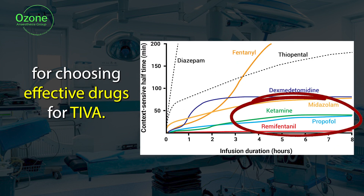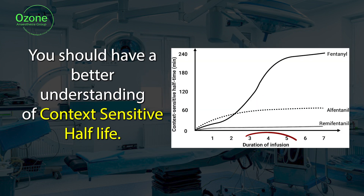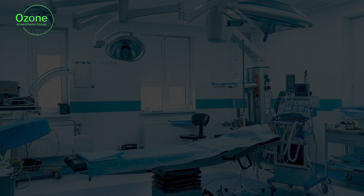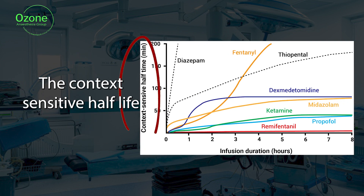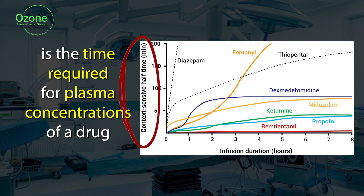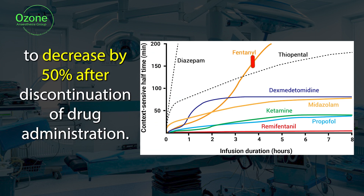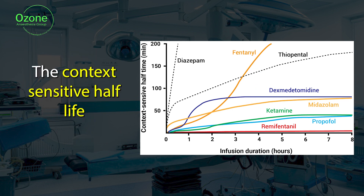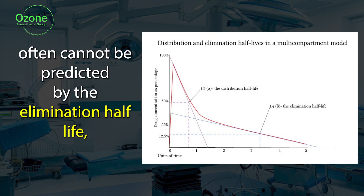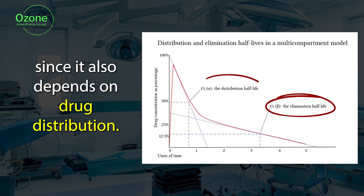For choosing effective drugs for TIVA, you should have a better understanding of Context-Sensitive Half-Life. Context-Sensitive Half-Life is the time required for plasma concentrations of a drug to decrease by 50% after discontinuation of drug administration. It often cannot be predicted by the elimination half-life, since it also depends on drug distribution.